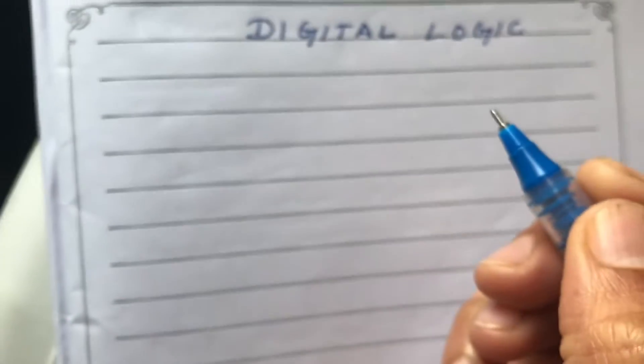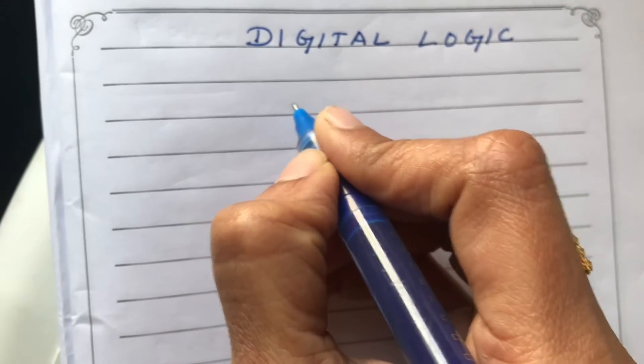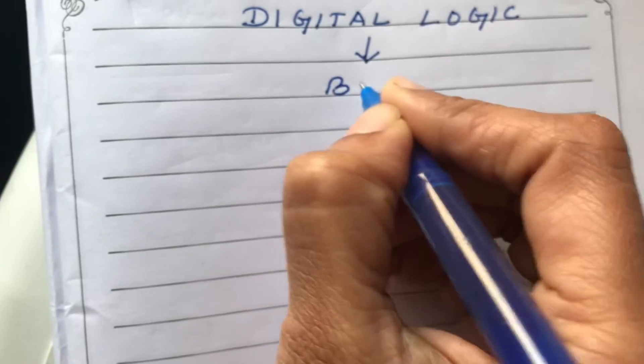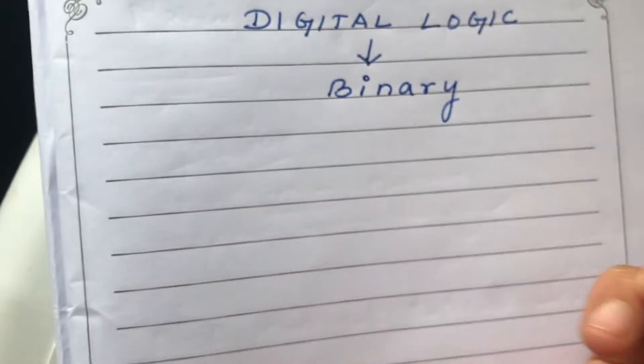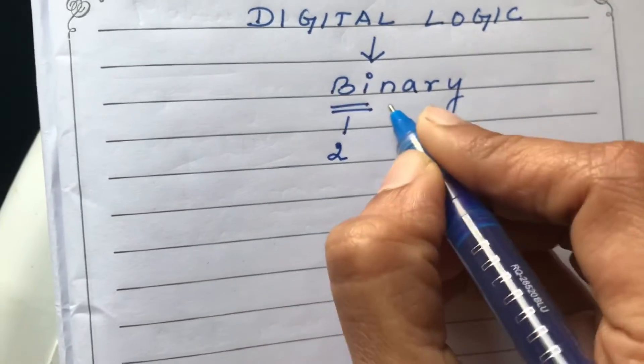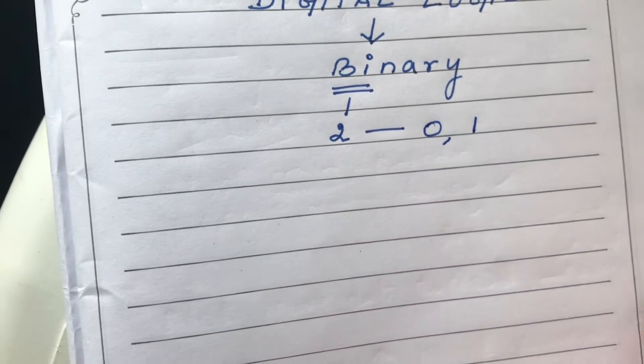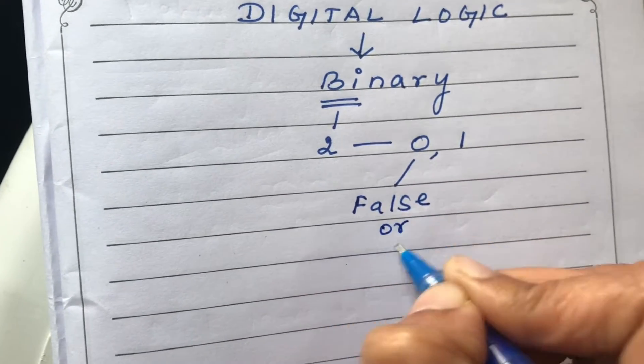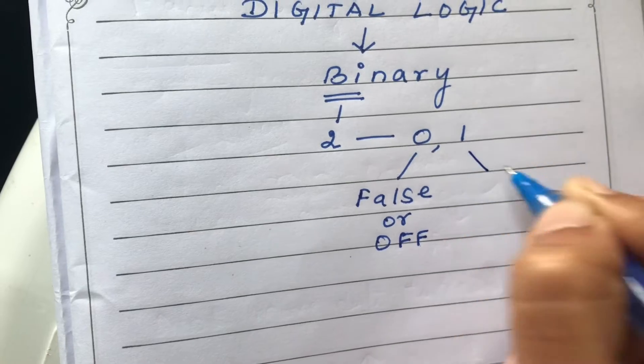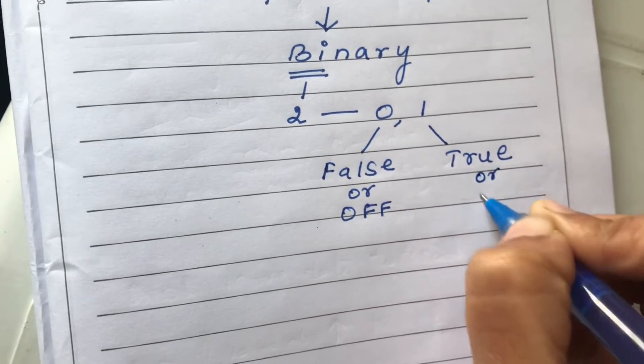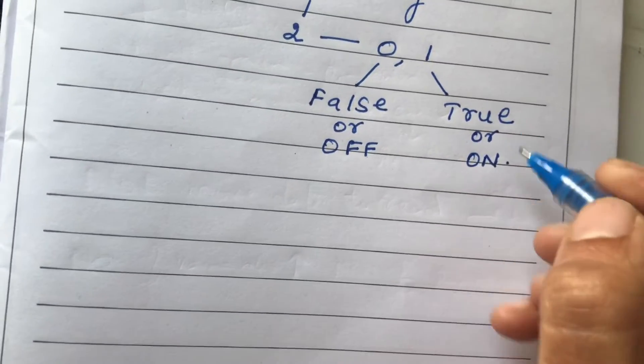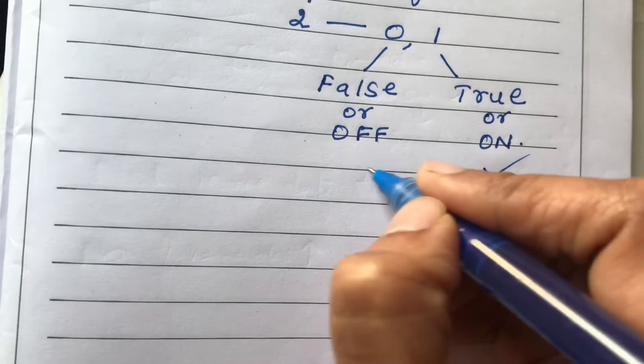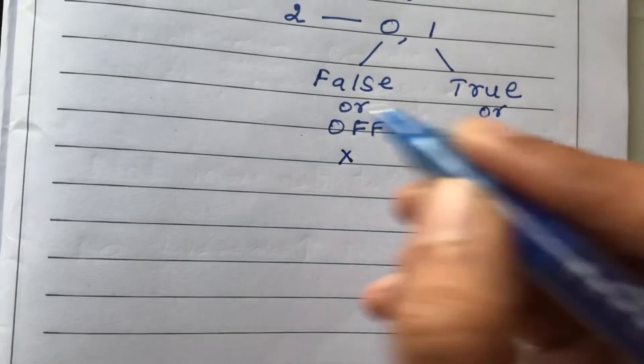So now we'll be concentrating on the basics of digital logic. Digital logic in general means only binary digits, where 'bi' means two. So it has only two numbers: 0 and 1, which means 0 can be called as false state or off state, and 1 can be called as true state or on state. So 1 always means it is in the positive side and 0 always means it is in the negative side.